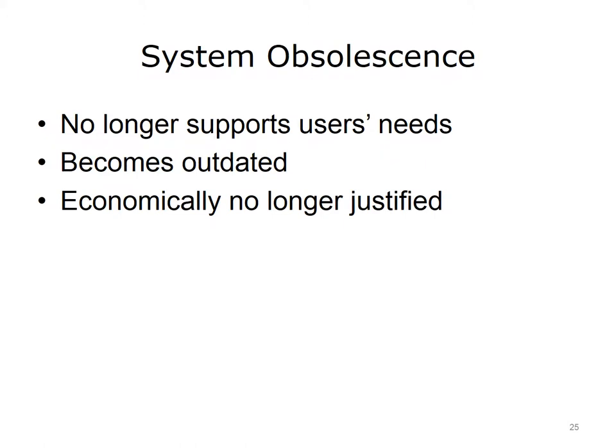Eventually, it is no longer cost-effective to support and maintain an information system. All systems degrade over time and/or just become obsolete. Maintenance costs begin to increase, new technology offers a way to perform the same or additional functions more efficiently, or users start to ask for more features and capability. New system requests are submitted, and the system development process begins again.